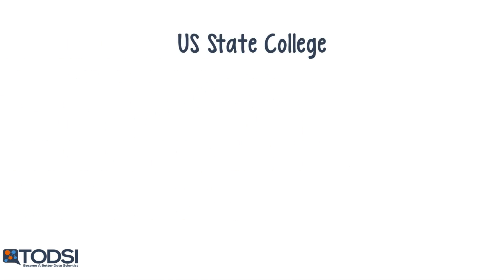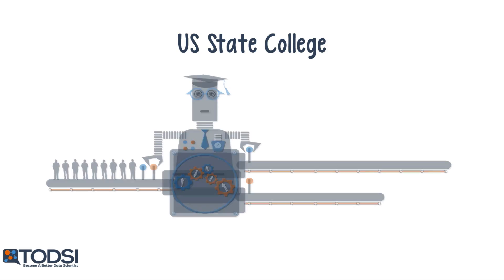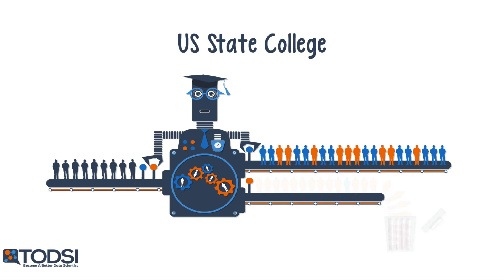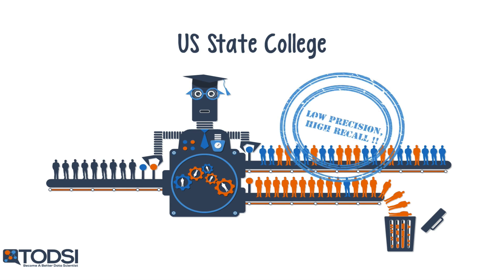A model for a US state university undergraduate admissions would be designed differently, since the goal is to admit a much larger number of students. A few underqualified students will likely be accepted, so the false positive count will be high. But unlike the previous model, very few qualified students will be overlooked, so the number of false negatives will be low. This model will have low precision and high recall.